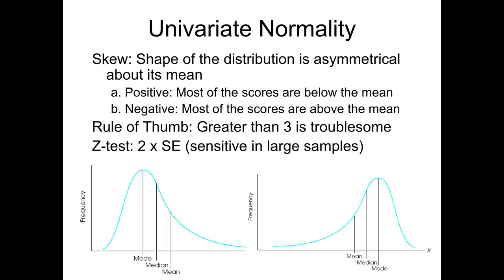One of the first things we're going to look at is normality. We've already done the steps of looking at descriptives of our data, looking for outliers and other things. Now we're going to be looking at the multivariate portion of it. When we're looking at normality, we're looking at skewness and kurtosis. We've got two figures on the bottom — the one on the left is a positively skewed distribution, and the one on the right is a negatively skewed distribution because the tail is heading in the negative direction.